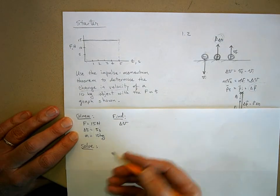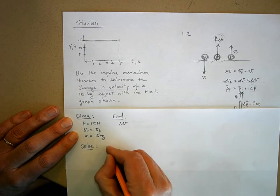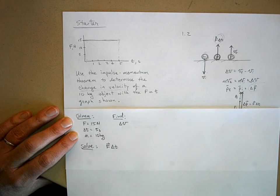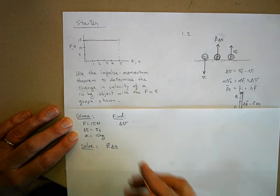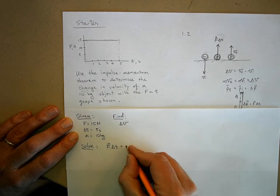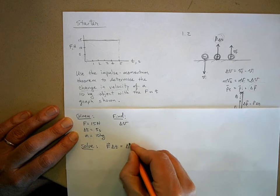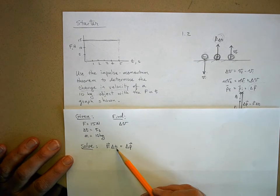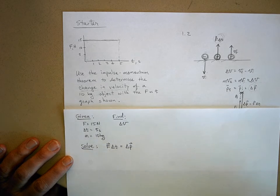Now, so the impulse momentum theorem says this. If I apply a force for a period of time, this makes sense, you guys. That will cause the object to change momentum. Force times time equals a change in momentum.